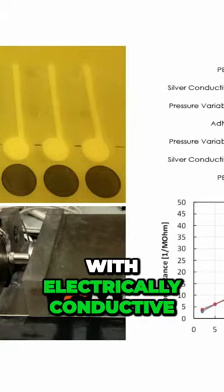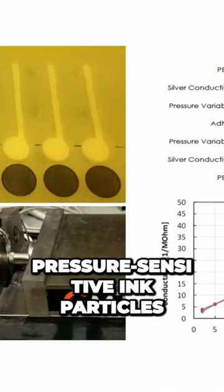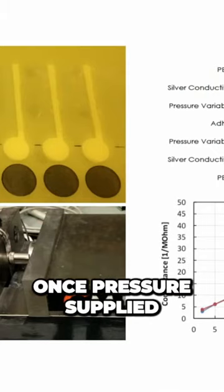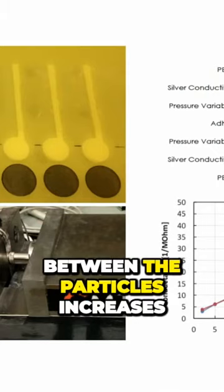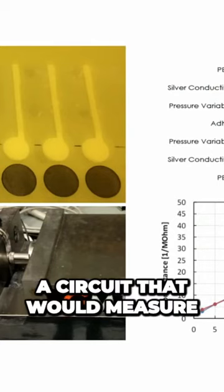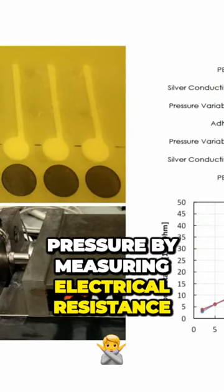I decided to print a film sensor with electrically conductive, pressure-sensitive ink particles. Once pressure is applied, the connectivity between the particles increases. Therefore, I could design a circuit that would measure pressure by measuring electrical resistance.